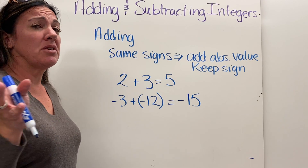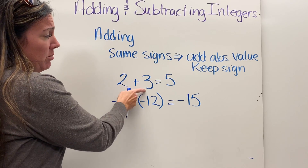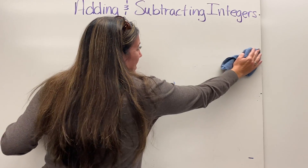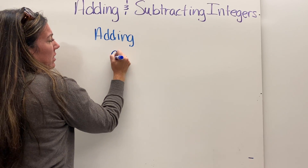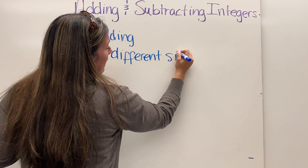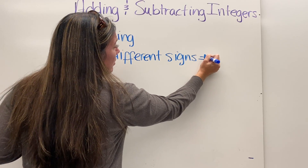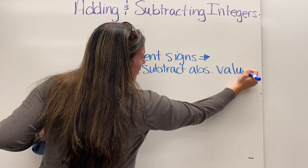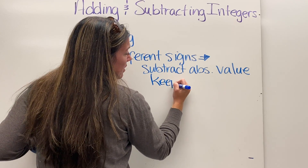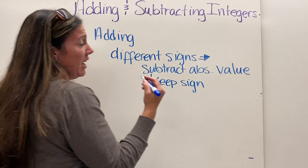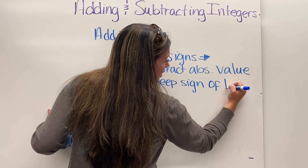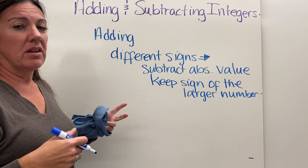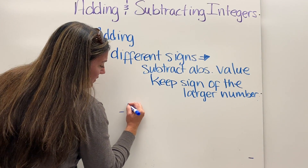So if they have the same signs, you simply add their absolute values and keep the sign. Both positive means a positive answer; both negative means the answer is negative. Now, what if they have different signs? If they have different signs, you subtract their absolute values and keep the sign of the number with the highest absolute value — the larger number. For example, if I have negative ten plus four...